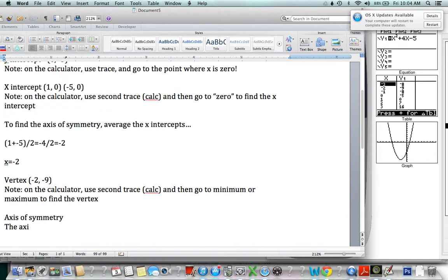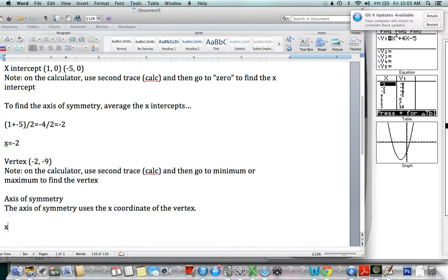Now to find the axis of symmetry in the quickest possible way. The axis of symmetry uses the x-coordinate of the vertex. Now remember the axis of symmetry is a line. It's a vertical line. So we do have to say x equals. So because the x-coordinate of the vertex is negative two, it's x equals negative two. And that's basically how we explore a quadratic function using the TI-84.